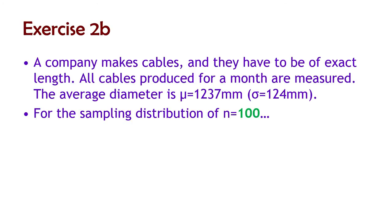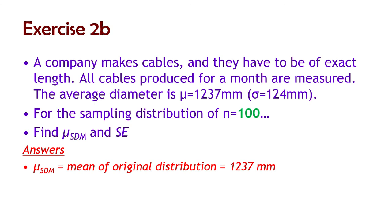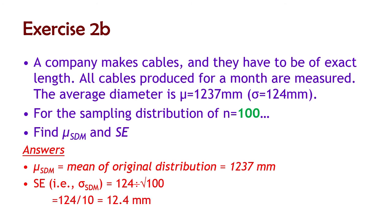Now the same situation with a larger sample size — n equals 100. Find the mean and standard error of the sampling distribution of means. The mean is the same as the original again: 12.37. The standard error is 124 divided by the square root of 100, which is divided by 10, giving us 12.4 millimeters — smaller than the last one.